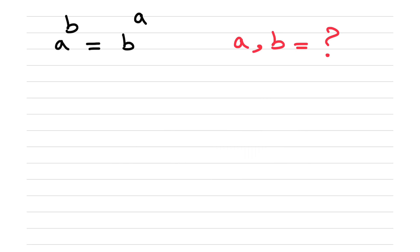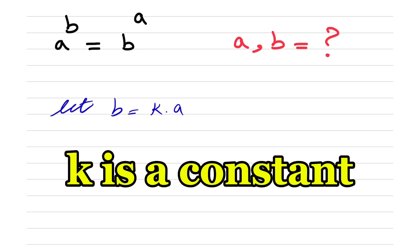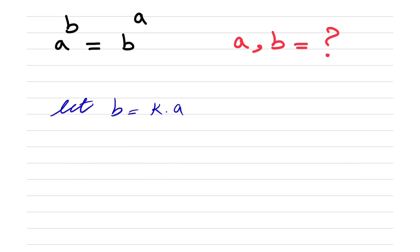We're going to take a different approach in this question — it's actually a very interesting way of solving this. We're going to let b equal k times a. We'll get into the detail of what k can be at the end of this question. So on the left side we have a to the power of b, which is a to the power of k times a, and on the right side we have b, which is k times a, all to the power of a.